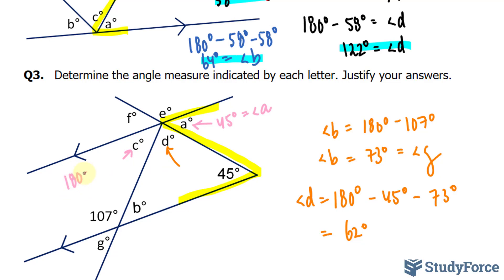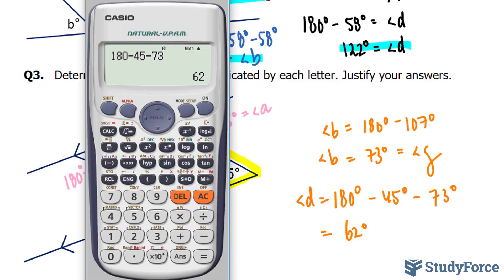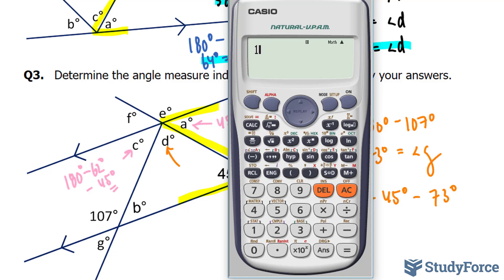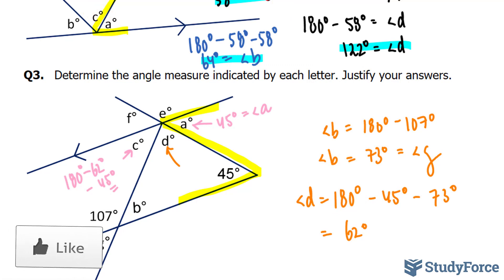So I'll take 180 minus what I found for D, which was 62, minus what I found for A, which was 45. And let's find out the difference. 180 minus 62 minus 45 gives us 73. So this angle and B are the same. And you could have found that out by using the Z rule as well, alternating angles.